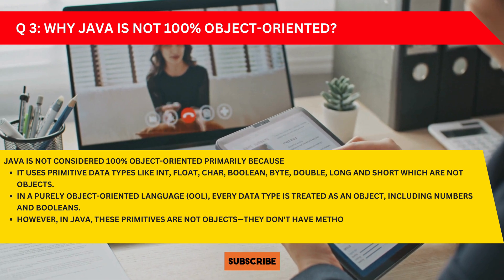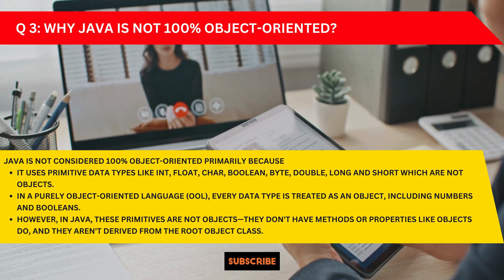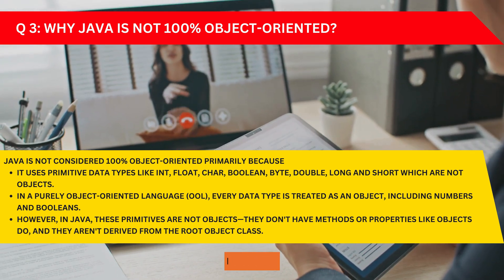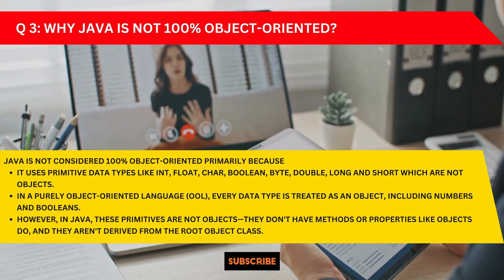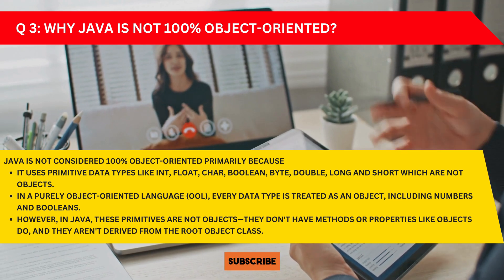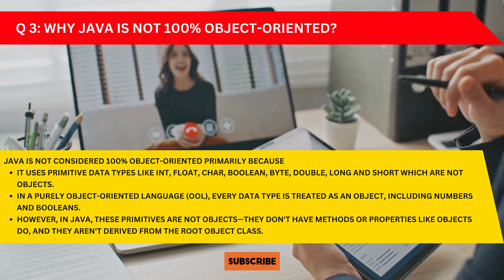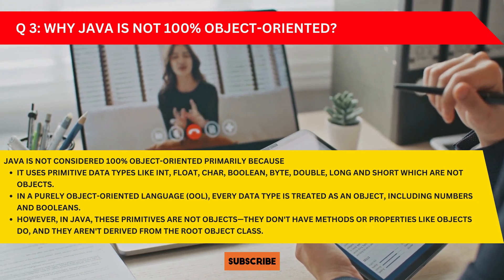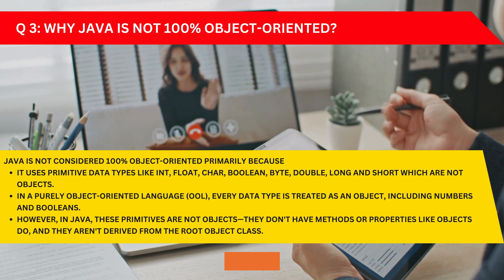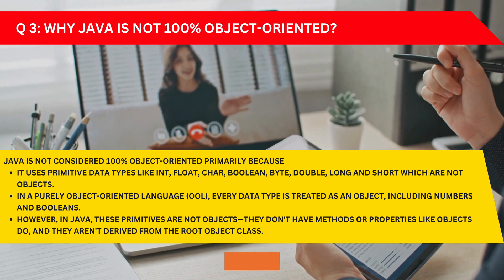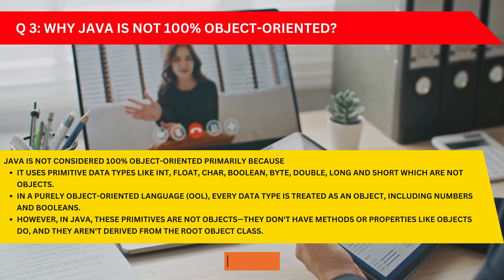Java is not considered 100 percent object oriented primarily because it uses primitive data types like int, float, char, boolean, byte, double, long, and short, which are not objects. In a purely object oriented language, every data type is treated as an object including numbers and booleans. However, in Java these primitives don't have methods or properties like objects do, and they are not derived from the root Object class. That is why Java is not 100 percent object oriented.